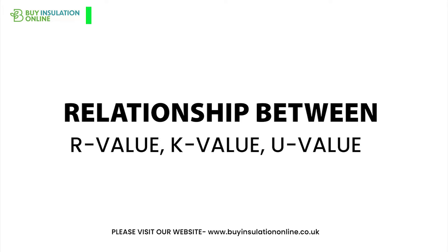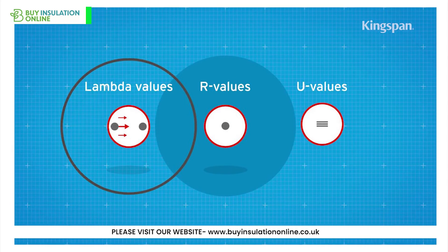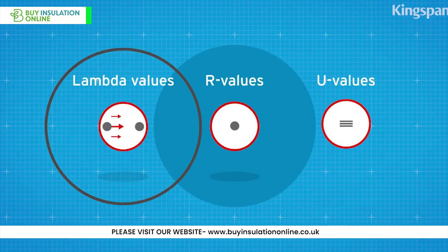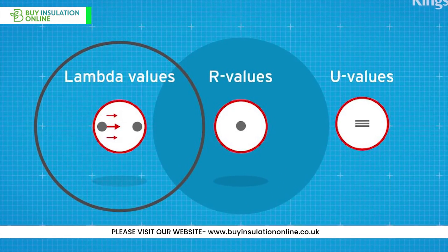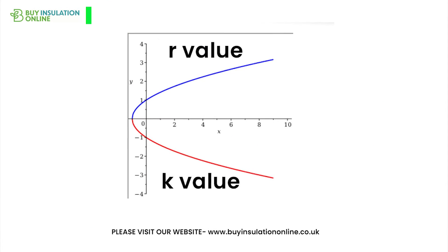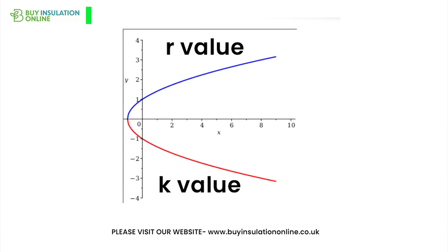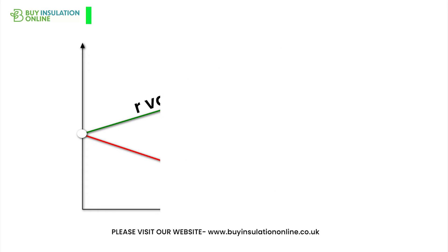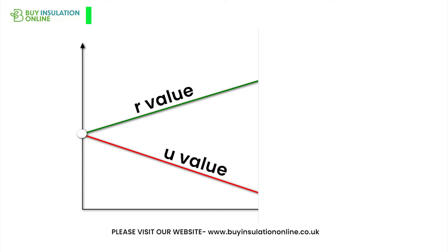Relationship between R-value, K-value and U-value. The R-value, K-value and U-value are all related to each other. The R-value and K-value are inversely proportional to each other, meaning that the higher the R-value, the lower the K-value and vice versa. The U-value and R-value are also inversely proportional to each other, meaning that the lower the U-value, the higher the R-value and vice versa.